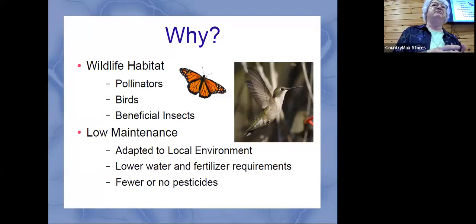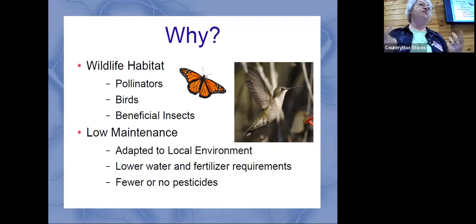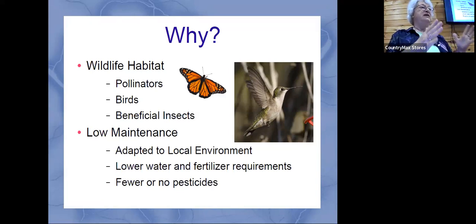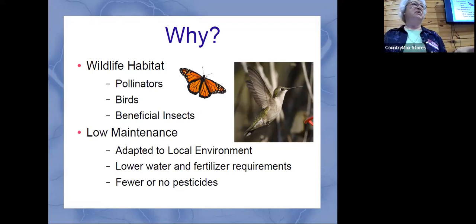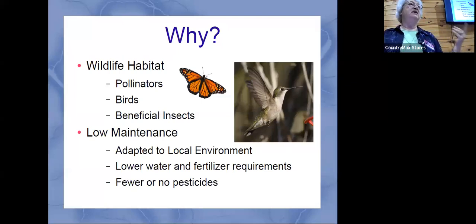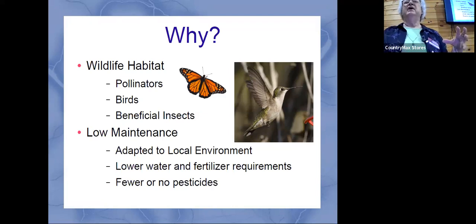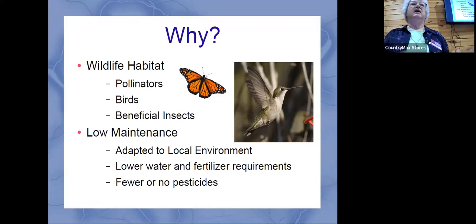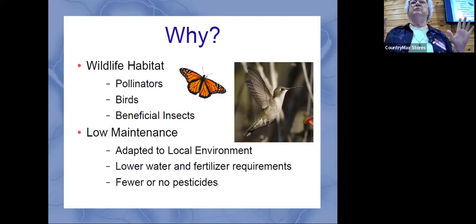The big thing we're talking about with native plants is that our native wildlife really depends on the plants that they grew up with and are used to. Native plants are plants that have learned how to adapt to our particular environment. Some plants know what to do if it's too dry, some if it's really wet, if they need sun or shade. They've really adapted to our particular climate, and because of that adaptation, we need less pesticides, less water, and it's just more of an eco-friendly environment.